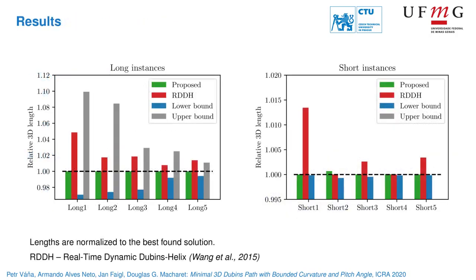We have compared the proposed method with Dubins helix approach for long and short instances proposed by the authors of the method. All the lengths are normalized by the best found solution and the proposed lower and upper bounds are also included if applicable. The proposed method finds the best solution in most of the cases and the results are close to the proposed lower bound, especially for the short instances.